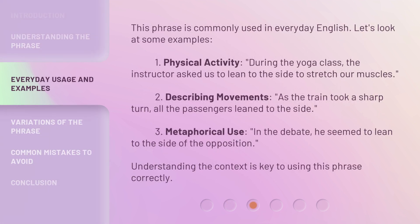This phrase is commonly used in everyday English. Let's look at some examples. 1. Physical Activity: During the yoga class, the instructor asked us to lean to the side to stretch our muscles. 2. Describing Movements: As the train took a sharp turn, all the passengers leaned to the side. 3. Metaphorical Use: In the debate, he seemed to lean to the side of the opposition. Understanding the context is key to using this phrase correctly.